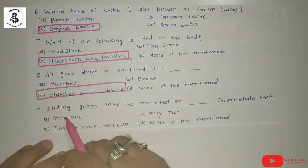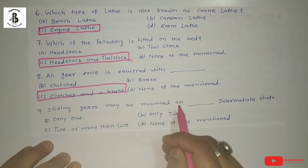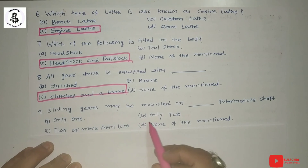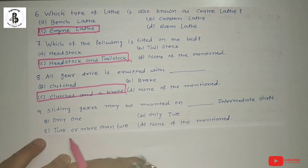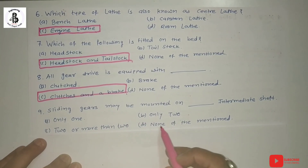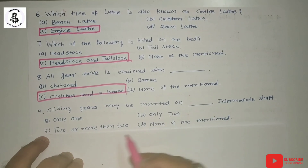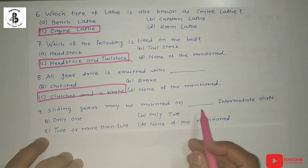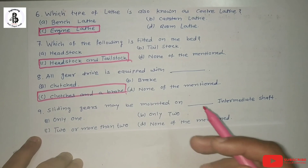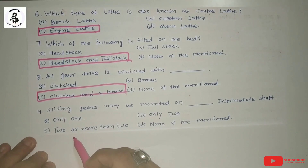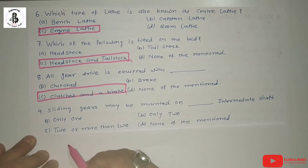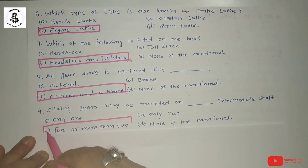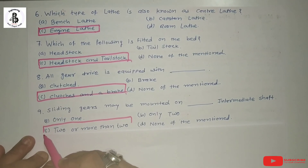The next question: sliding gear may be mounted on how many intermediate shafts? Option A: only one. Option B: only two. Option C: two or more than two. Option D: none of the above. Sliding gears may be mounted on two or more than two intermediate shafts. This is used to control speed as well as to transfer motion and power from one shaft to another. So the answer is C: two or more than two intermediate shafts.